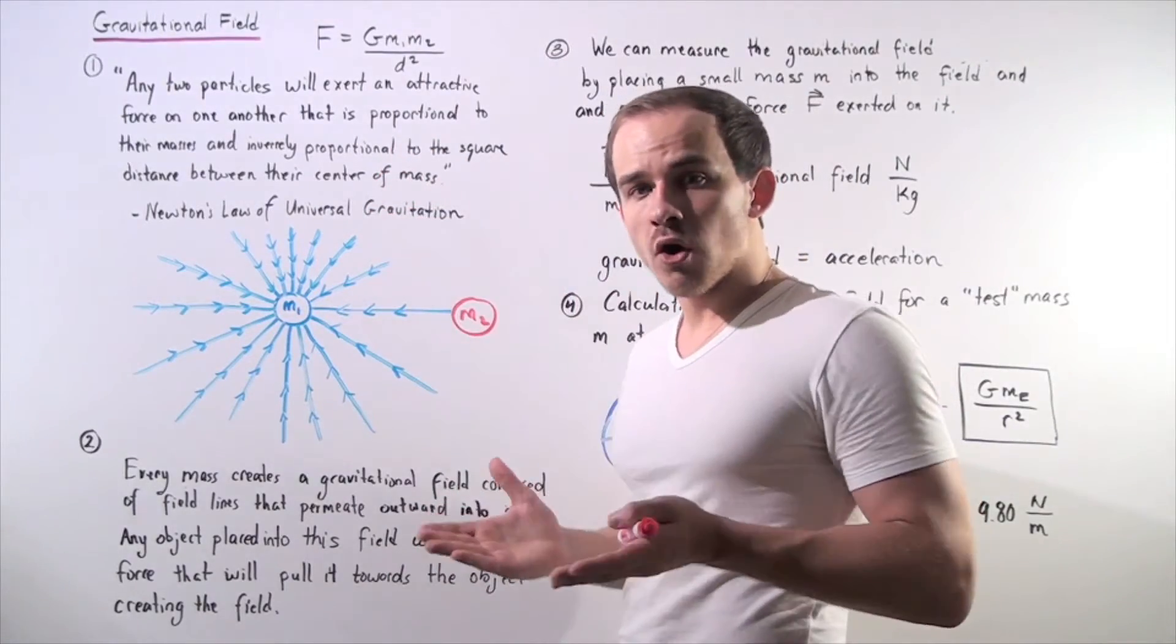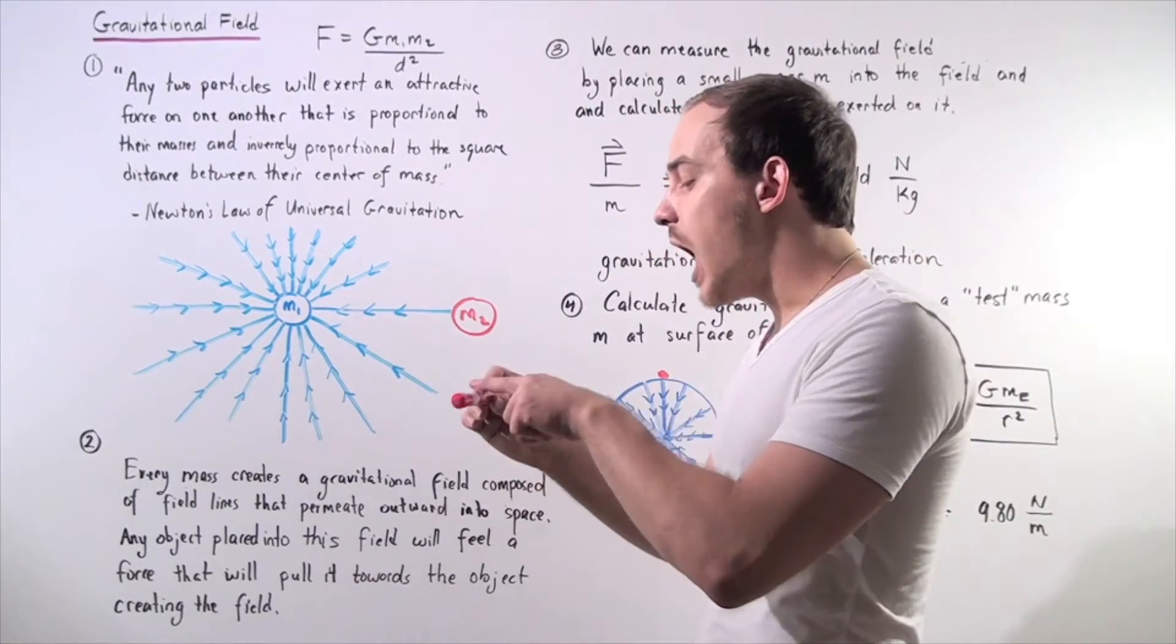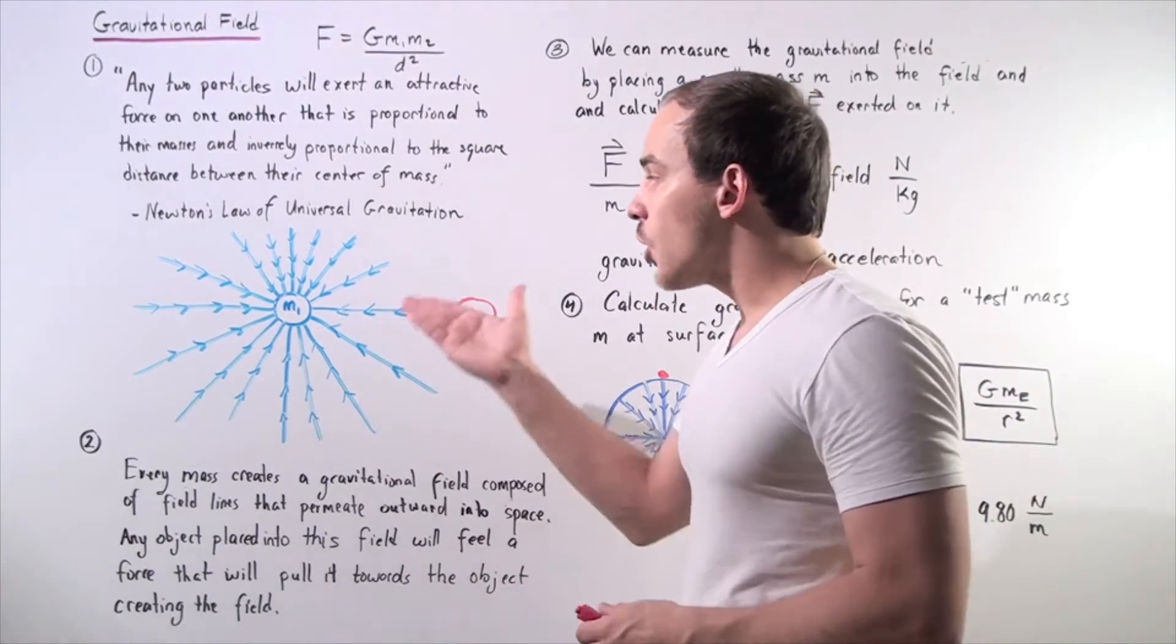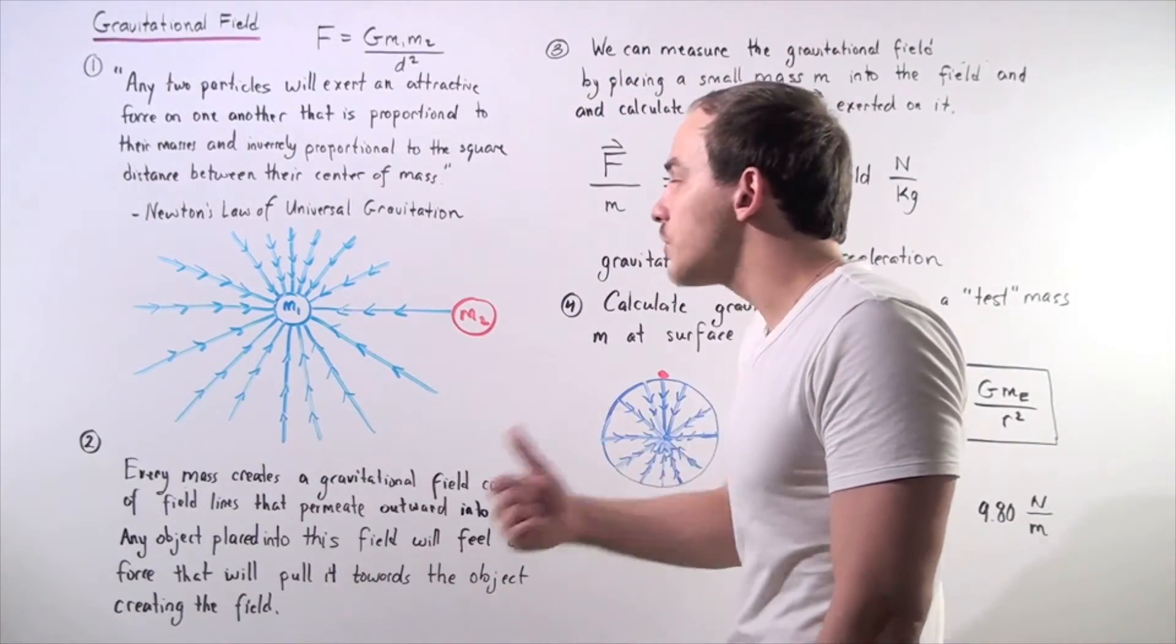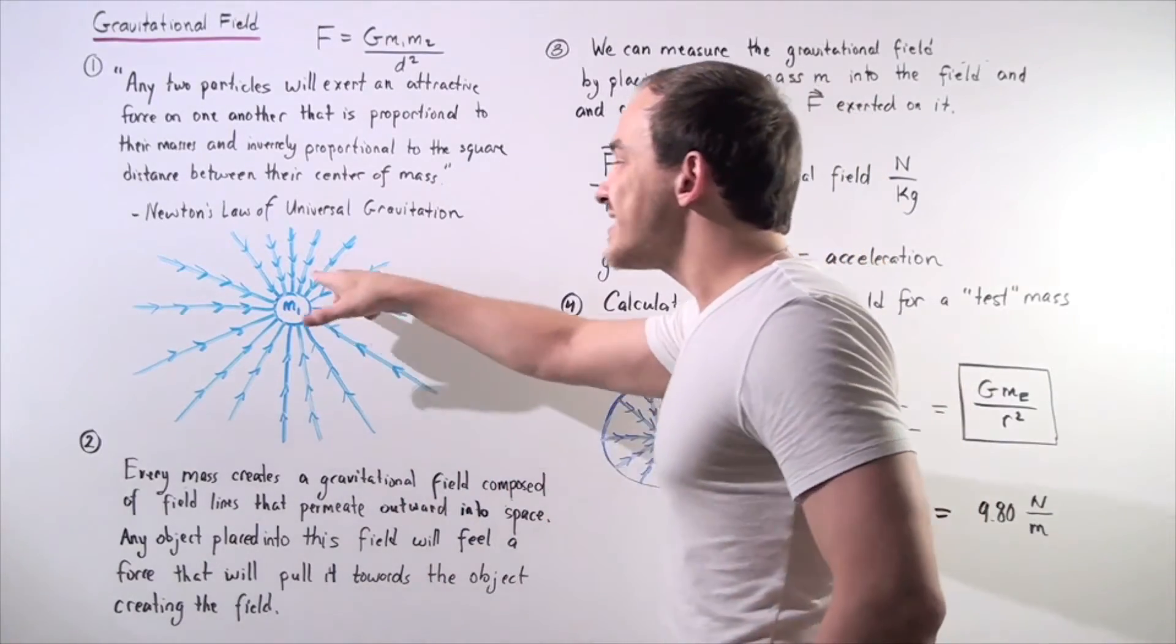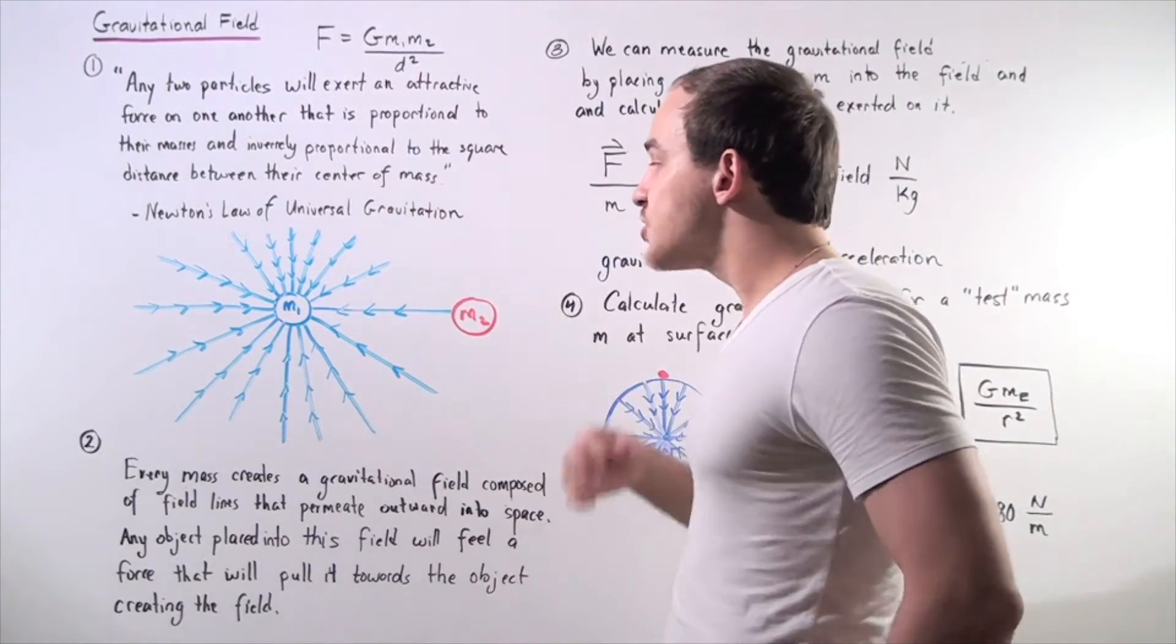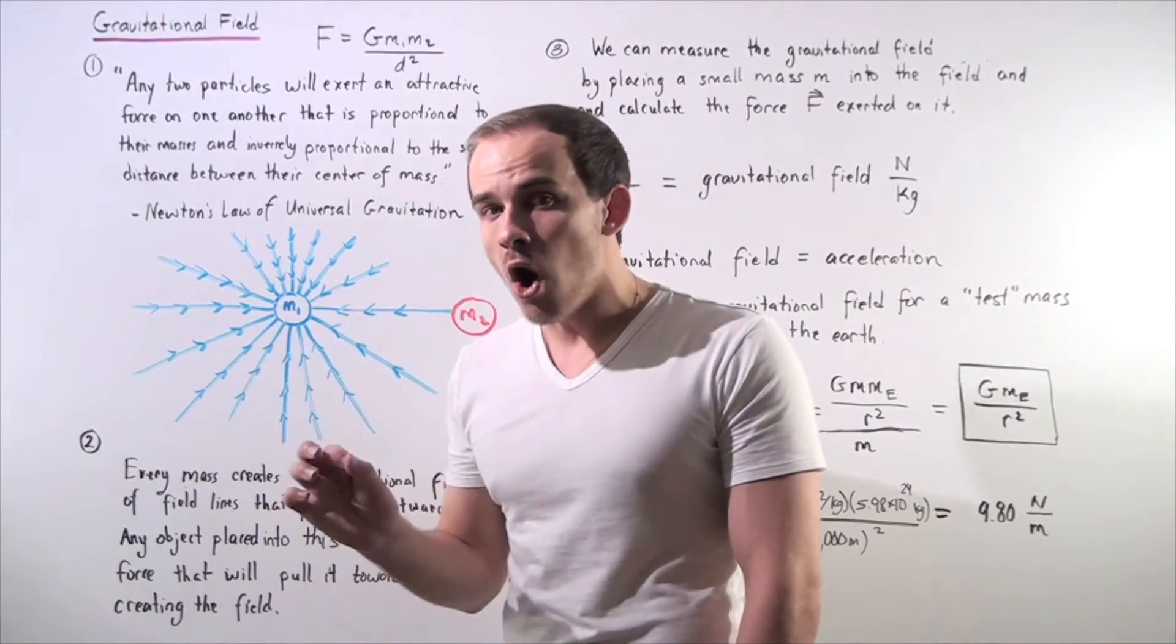So this invisible force is known as gravity. Now notice my object m2 also creates a force on my object m1, the earth, but because the earth has such a large mass, because the mass of the earth is so much larger than the mass of object number two, my marker, the acceleration of the earth is very, very tiny, unlike the acceleration of the marker. And so we can make the assumption that because our acceleration of the earth is so small, we can say our earth is in fact stationary.